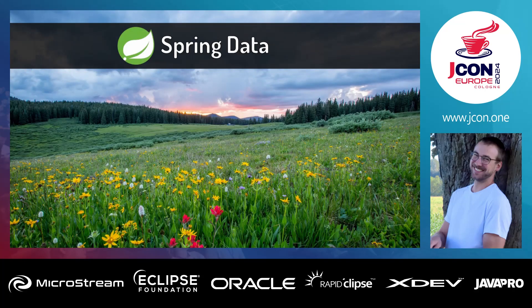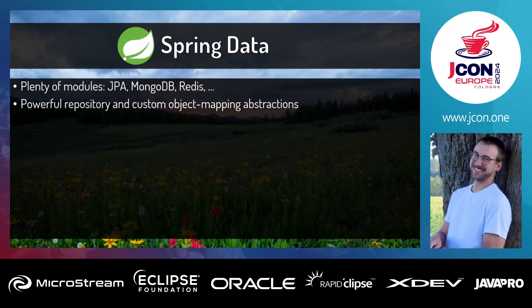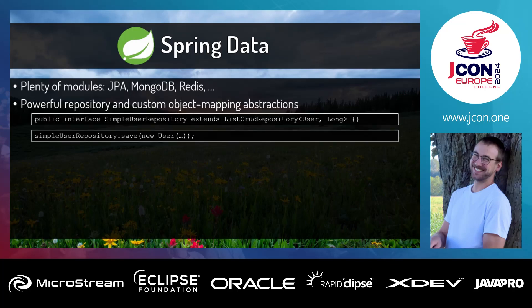A little bit about what Spring Data is: it's a framework to hide the complexity of data persistence. It's available for many different systems like JPA, MongoDB, or Redis. It provides a repository structure to abstract object mapping. Repositories let you store and query data, and you only need to create interfaces. In this example we have a ListCrudRepository which lets you store or find a list of users, and Spring injects the implementation.